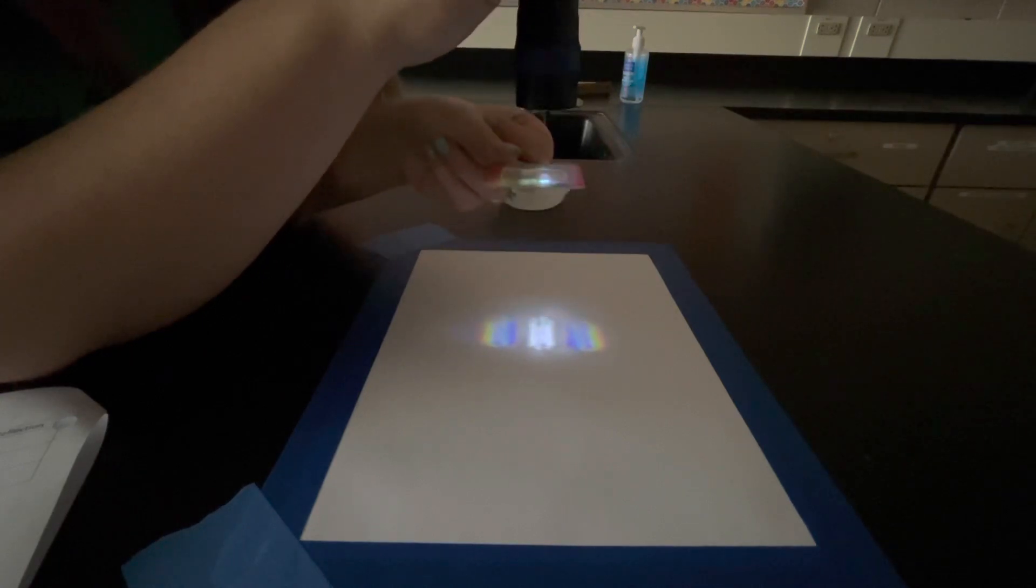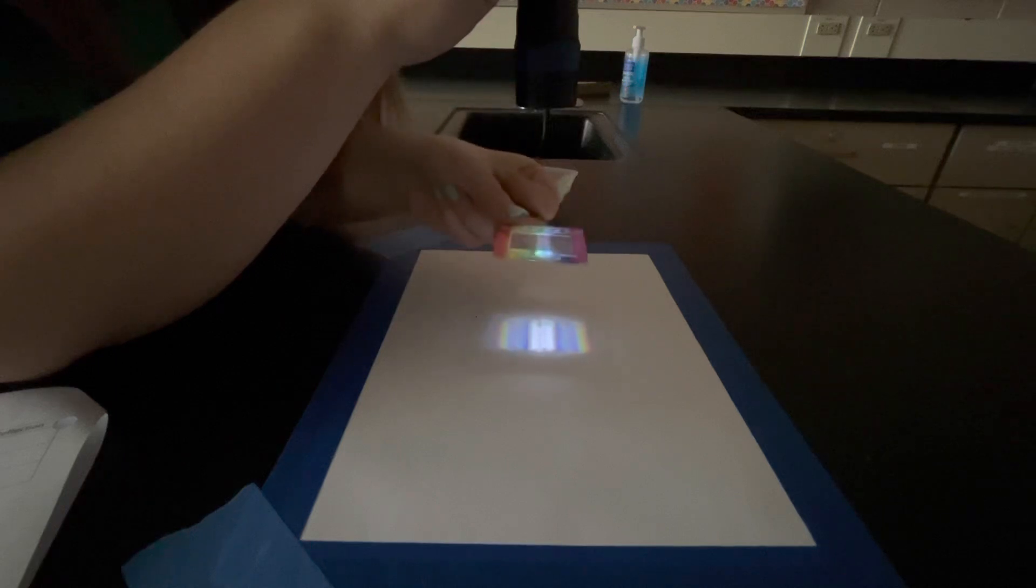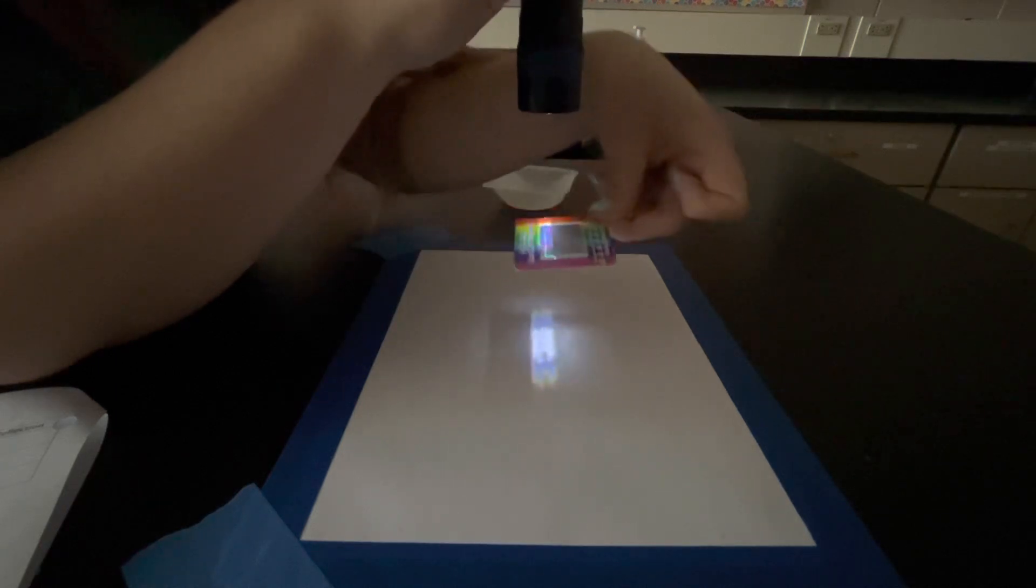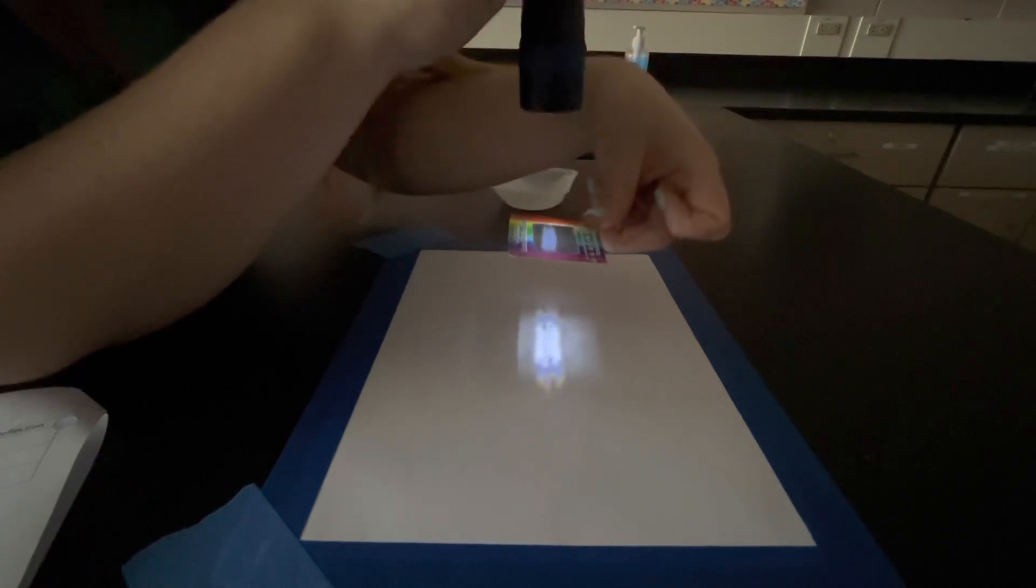We're now going to rotate the lens so the long edge is vertical. Record your observations of what happens when we do this.